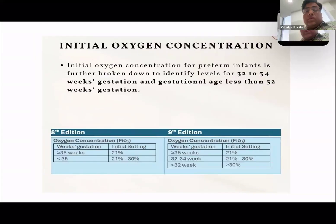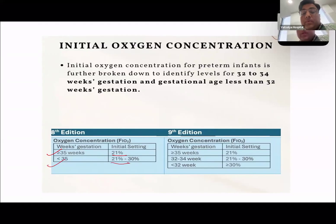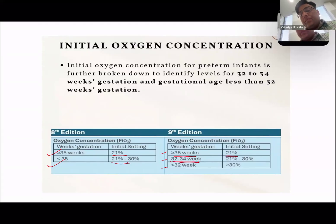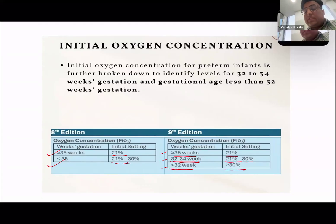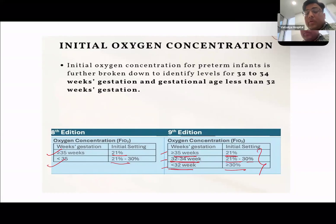Next is initial oxygen — how much FiO2 to start for ventilation. Previously there were two categories. Now there are three: if baby is more than 35 weeks, start from 21% FiO2; if baby is between 32 to 34 weeks, start from 21 to 30% FiO2; if baby is less than 32 weeks, start from more than 30% FiO2. After starting, titrate according to target saturations. The smaller the baby, the higher the FiO2 requirement.